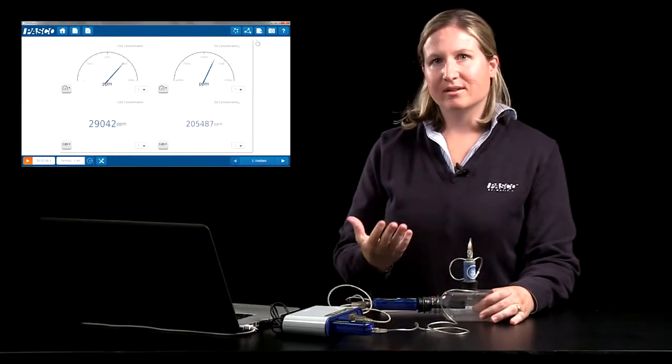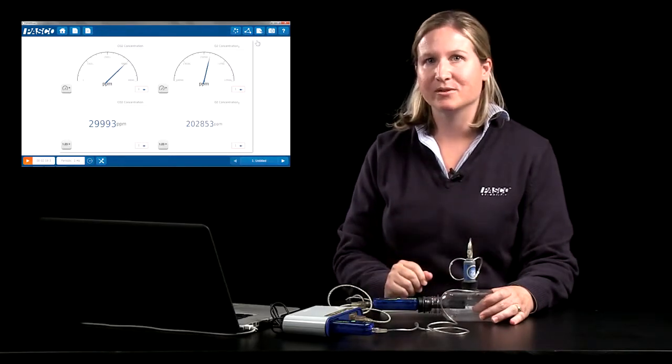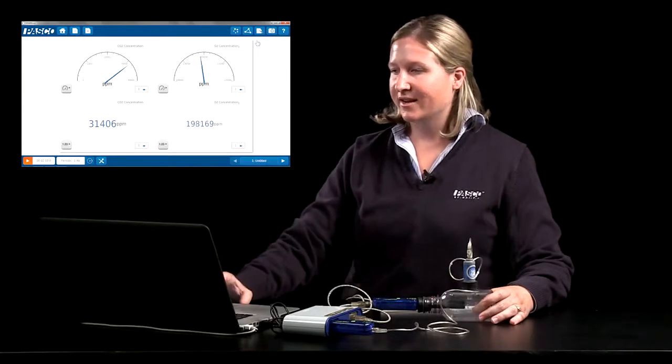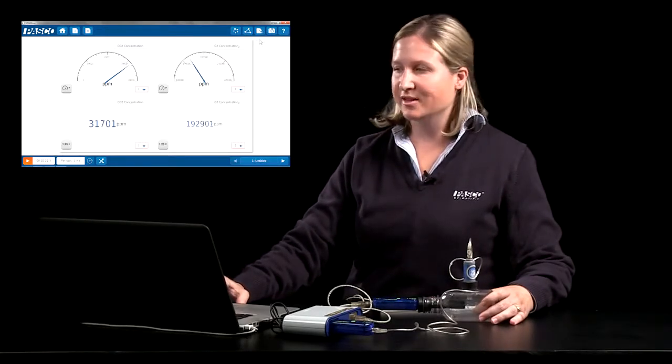The meter display gives that visual help to the student for determining is the carbon dioxide more or less compared to the initial sample of air, and is the oxygen more or less. And I can take a snapshot to preserve those values and do an easy comparison.